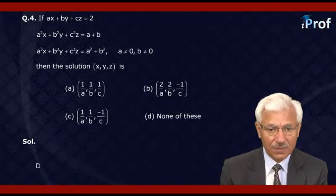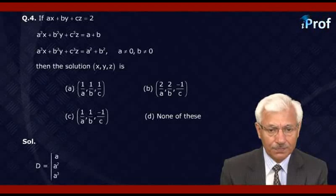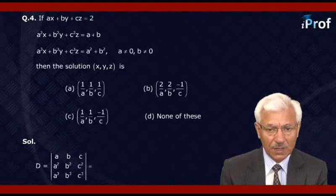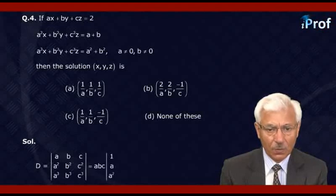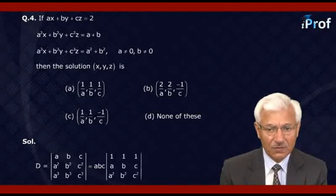Now here D is equal to the determinant with columns A, A², A³ and B, B², B³ and C, C², C³. Pulling out ABC common, we get ABC times the determinant with columns 1, A, A² and 1, B, B² and 1, C, C².